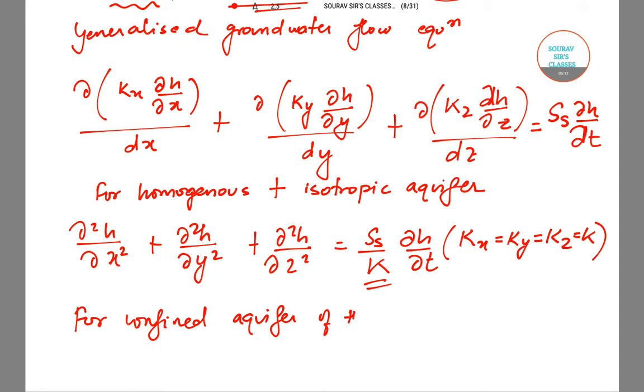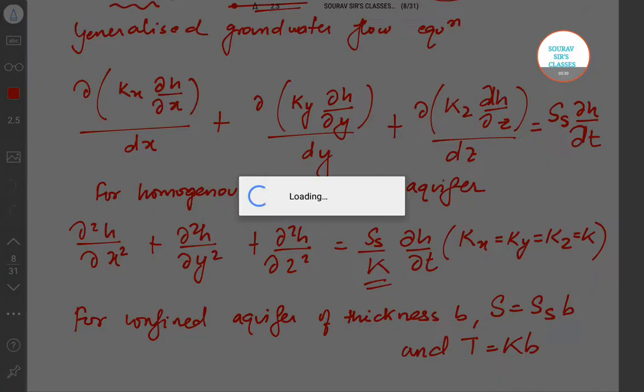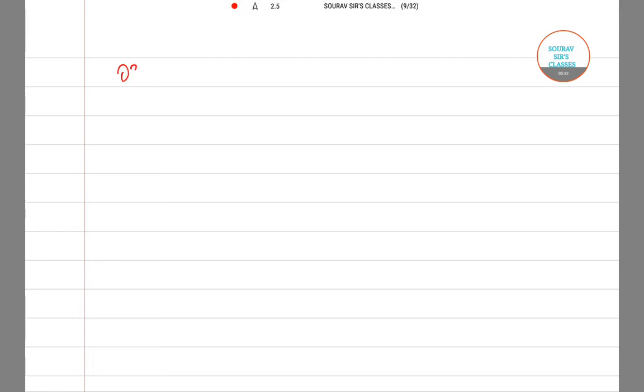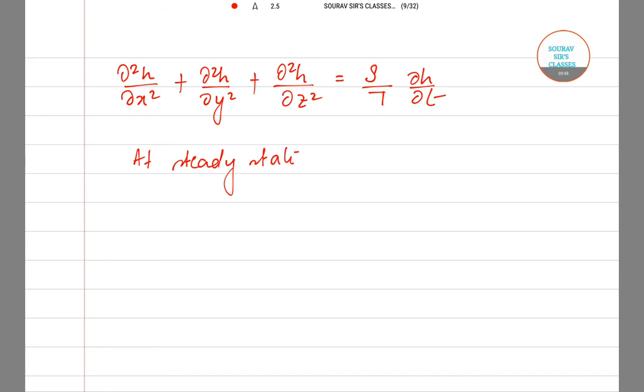For confined aquifer of thickness b, S equals Ss*b and T equals k*b. So we have del²h/del x² plus del²h/del y² plus del²h/del z² equals (S/T) * del h/del t.